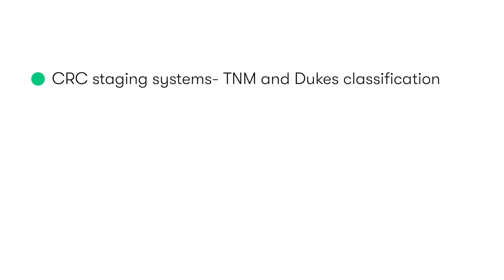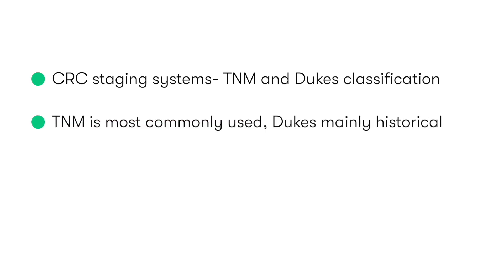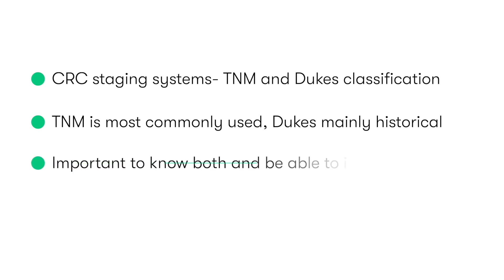The two most common staging systems you'll hear described with reference to colorectal cancer are the TNM staging system and the Dukes classification. Whilst the TNM system is most commonly used and Dukes is largely historical, it's really important for medical students to know both and be able to relate the two, as well as understand the basic concepts behind them and patients' prognosis.